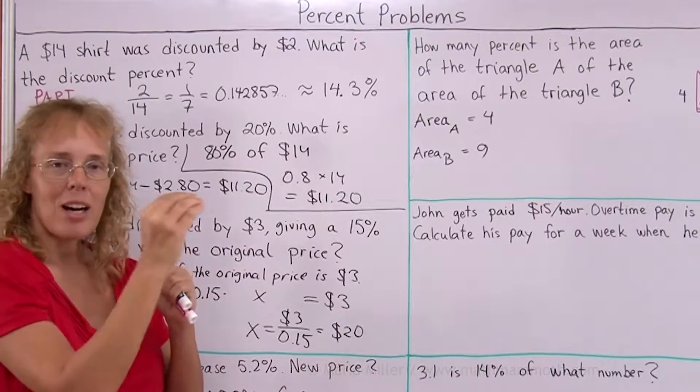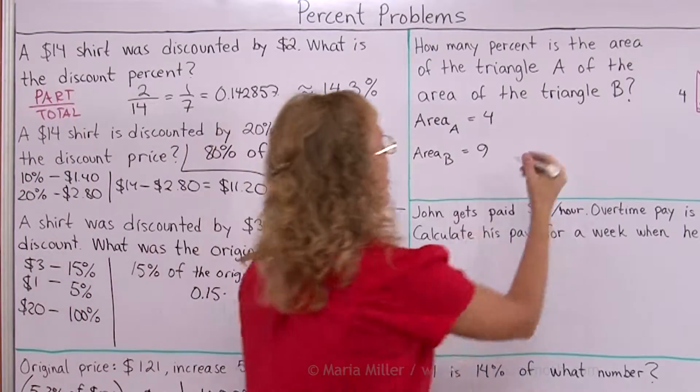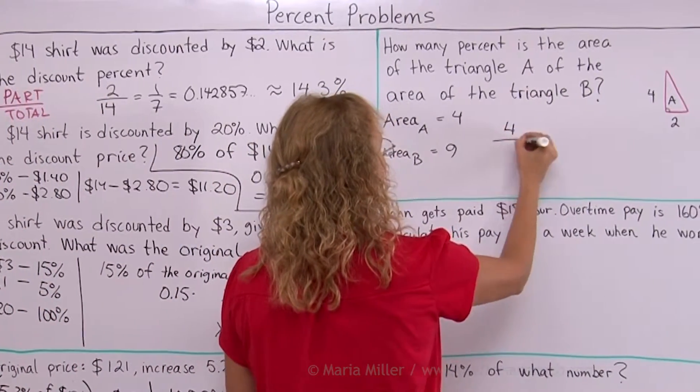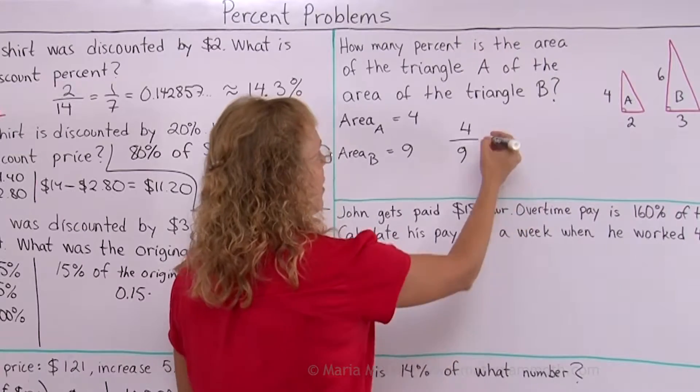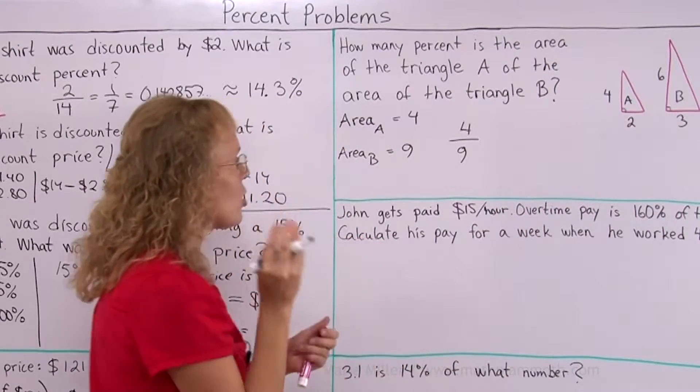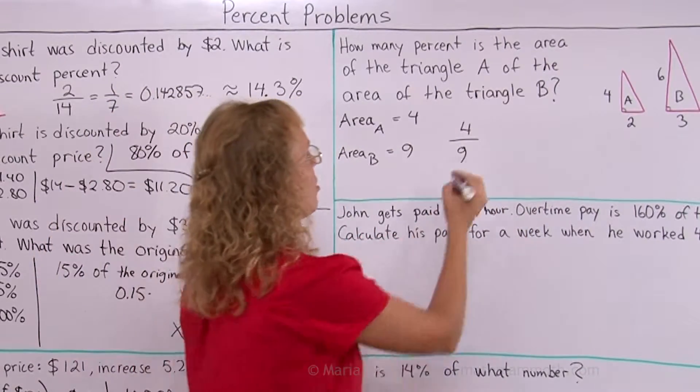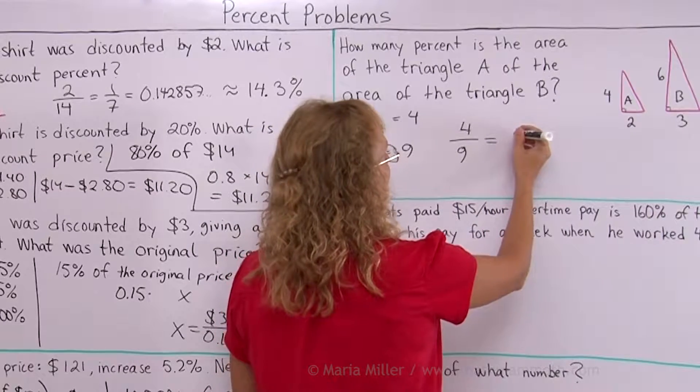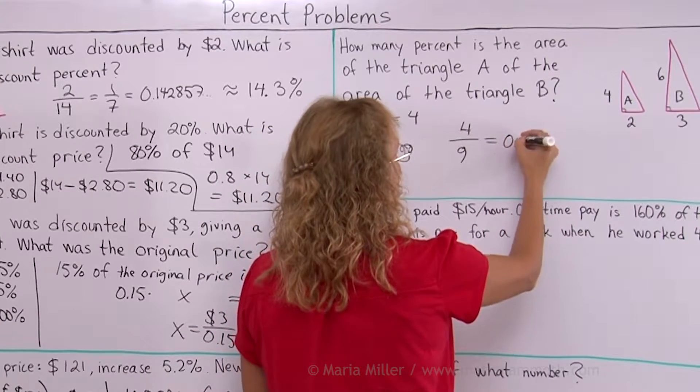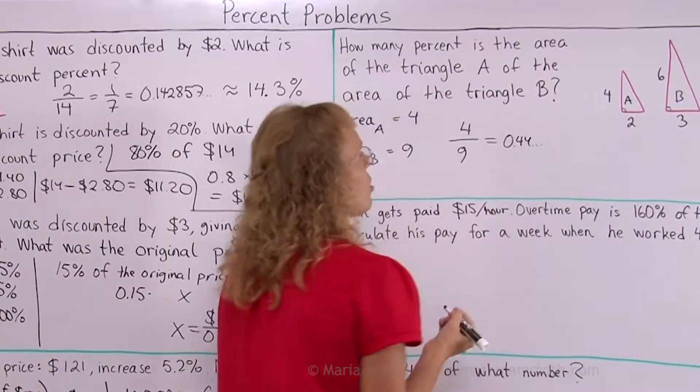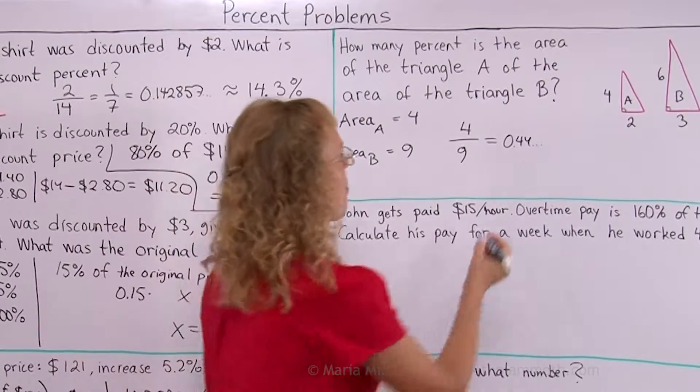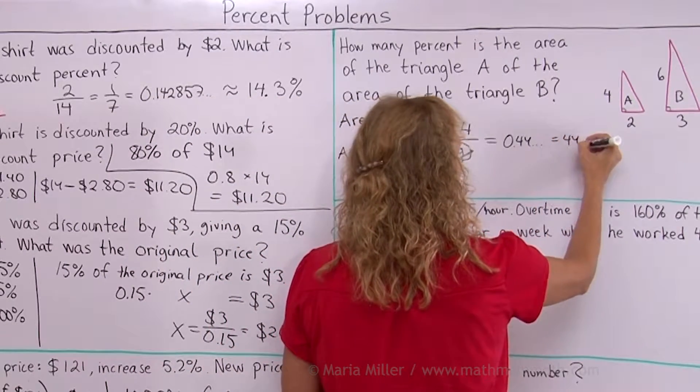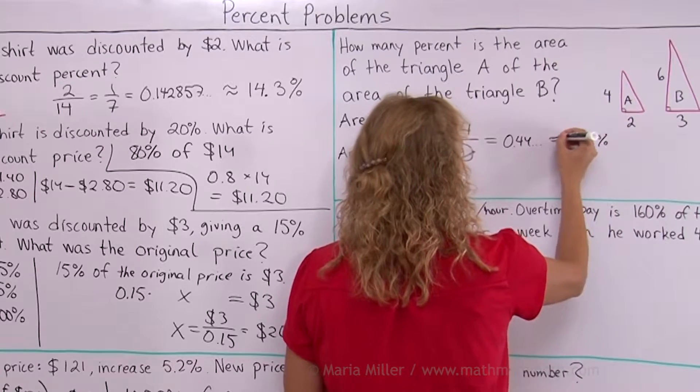Remember the part over total. This is the same idea. 4 over 9 as a percent. I just change this fraction 4 ninths into a decimal and then into a percent. This is 0.444 continuing with the fourth as a decimal. So it becomes 44.4% or approximately.